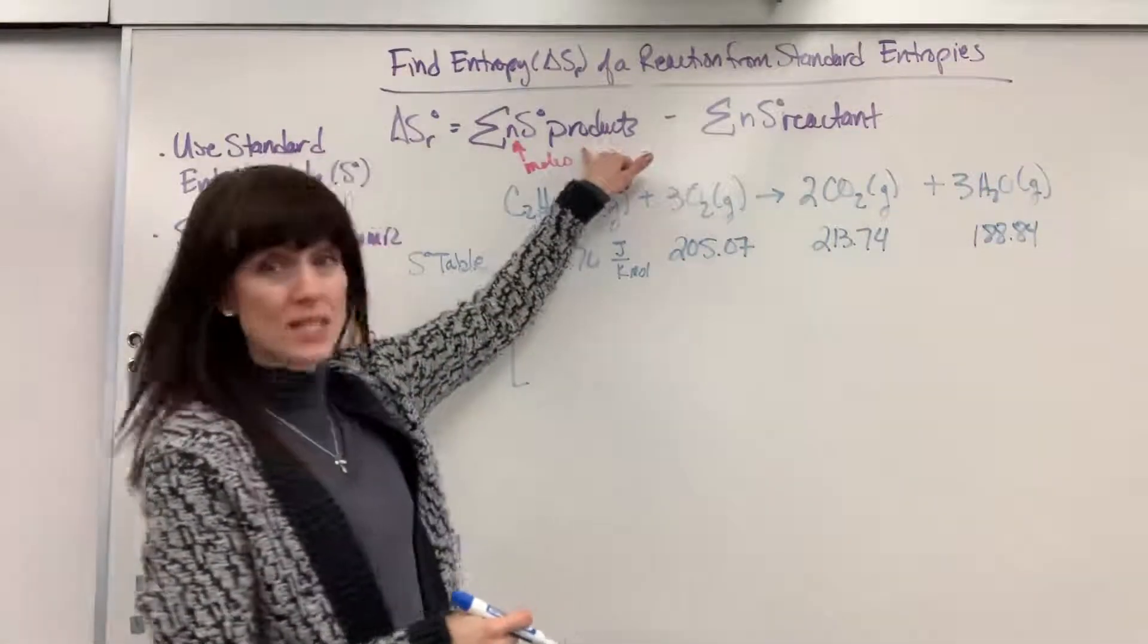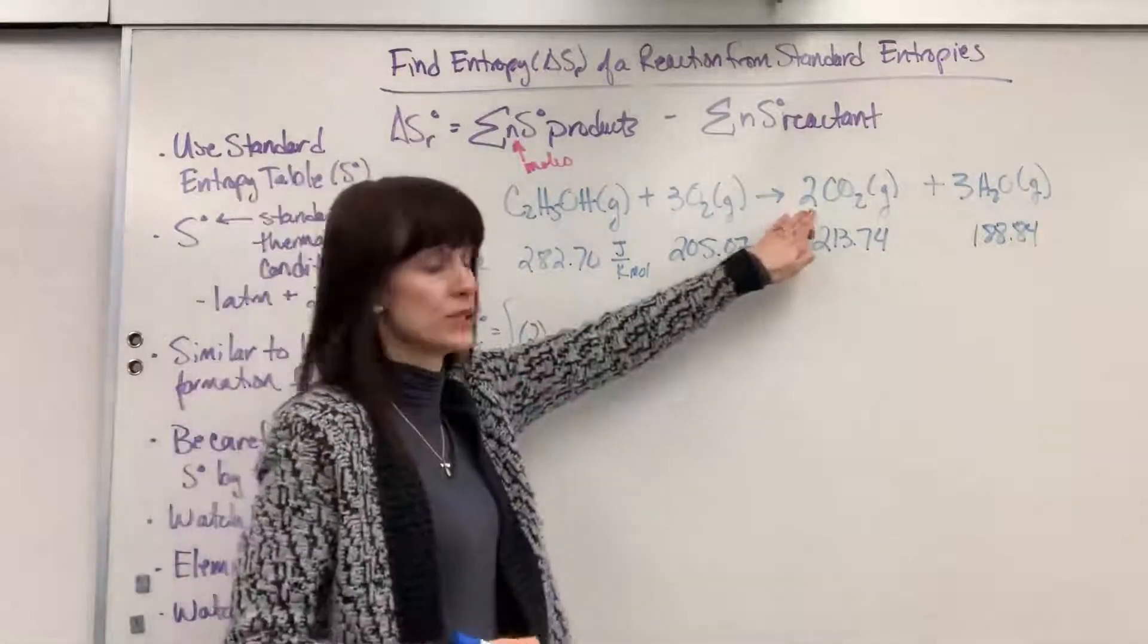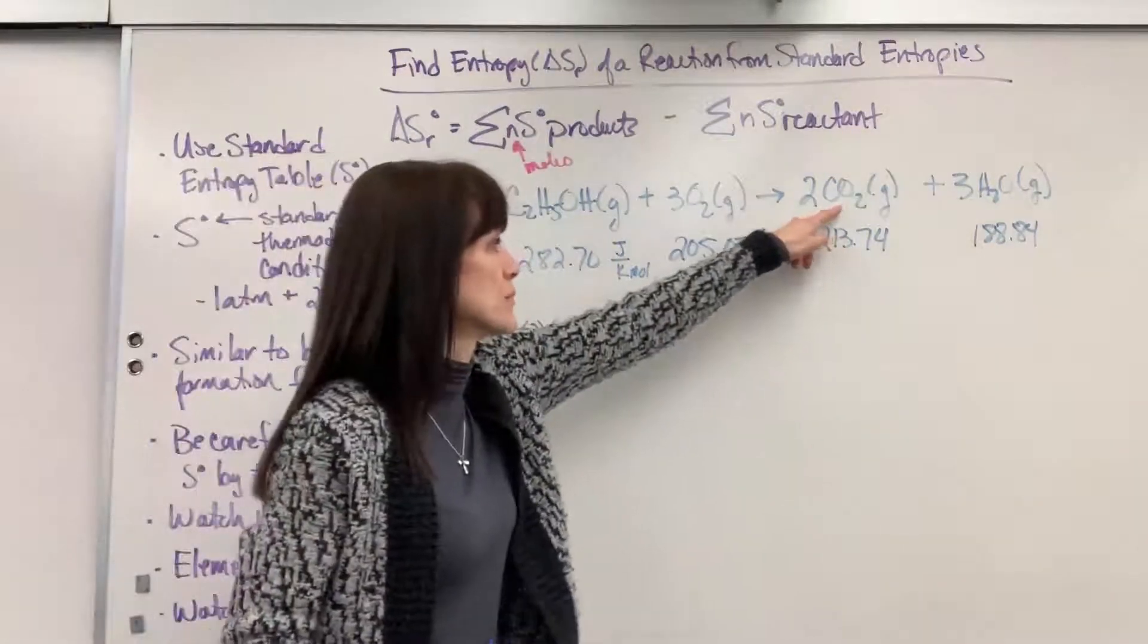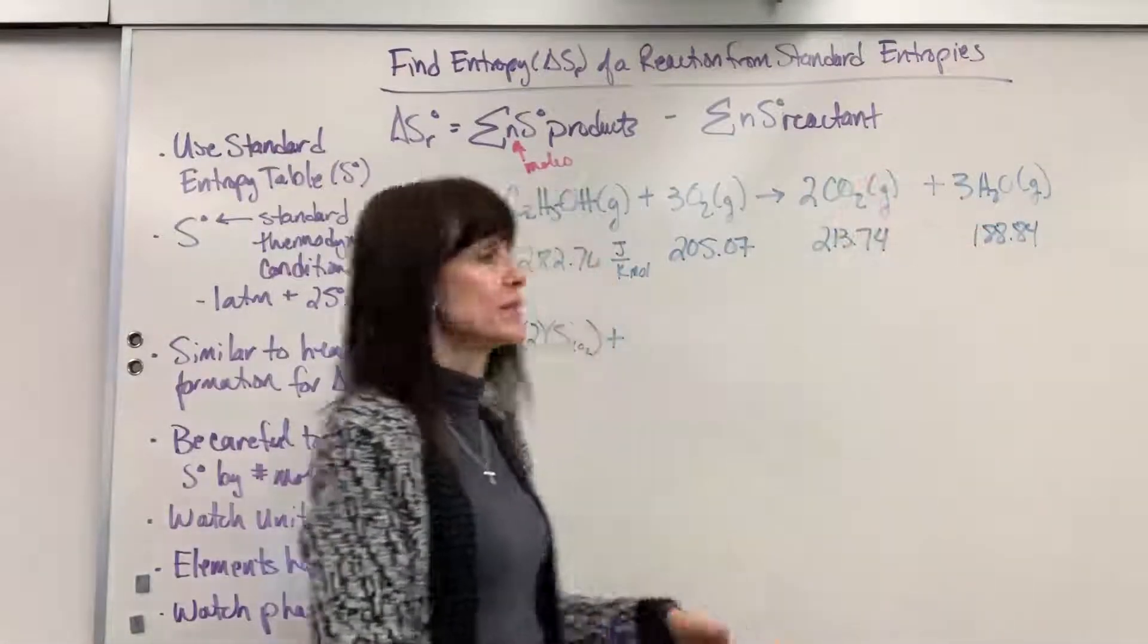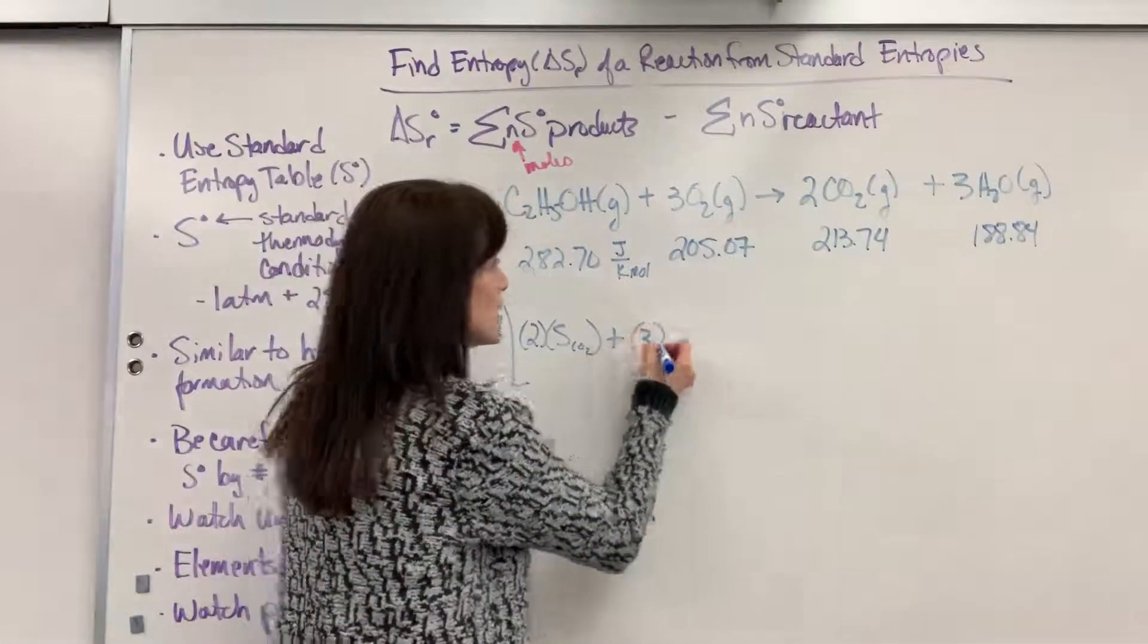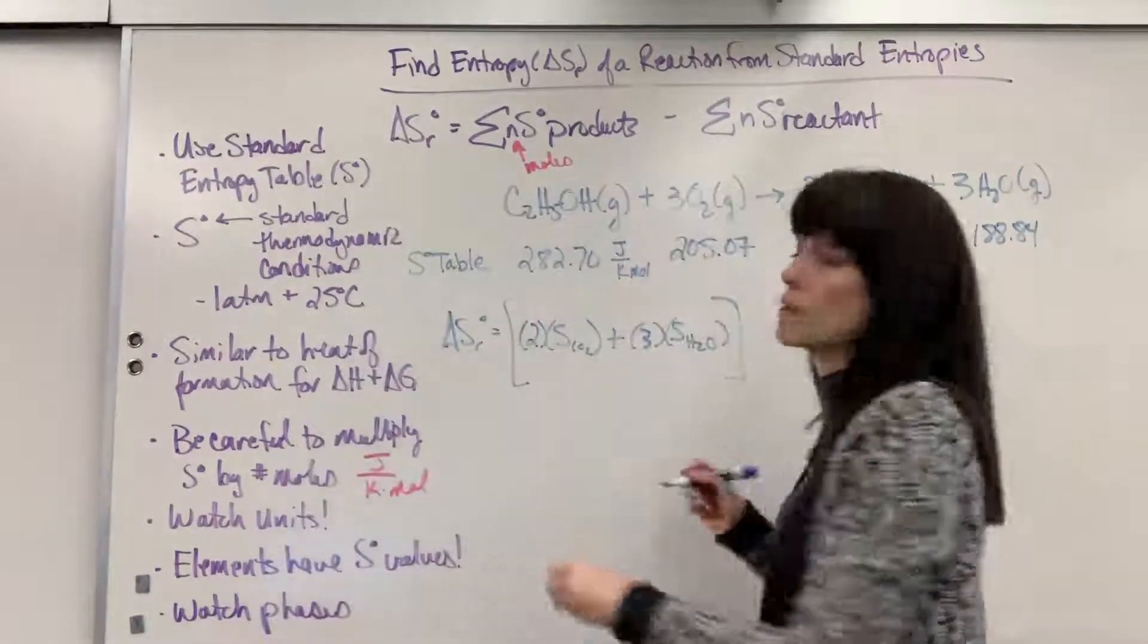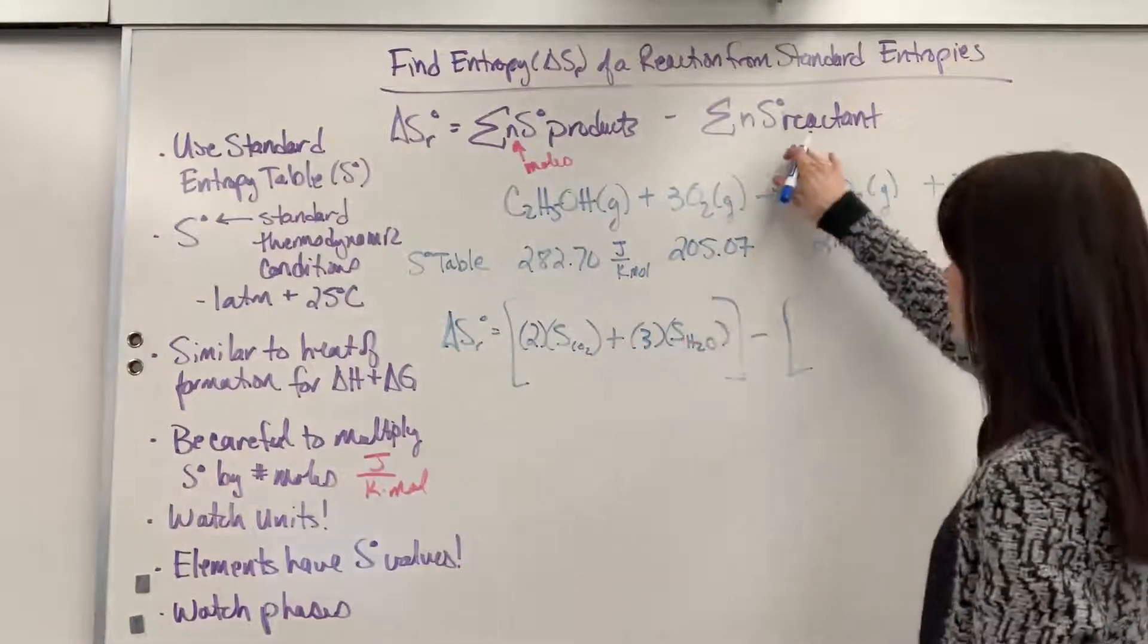So we're going to have the change in entropy for the reaction is going to equal, I put big brackets because we have to do the sum of the products. We are going to have two moles of the CO2 times the entropy for CO2. All right, so I'm looking at the entropy for CO2 and I've got to multiply that by two moles. Plus, we're going to add the other product because this is a sum, the summation. We're going to have three moles of water times the entropy of water.